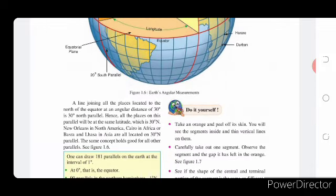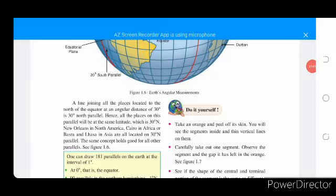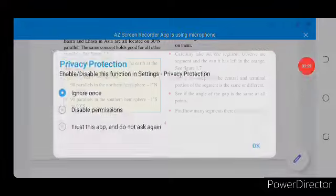The line joining all the places located to the north of the equator at an angular distance of 30 degrees is 30 degrees north parallel. Hence, the places on this parallel will be at the same latitude, which is 30 degrees north. New Orleans in North America, Cairo in Africa, Basra, and Lhasa in Asia are all located on 30 degrees north parallel. The same concept holds good for all other parallels. See figure 1.6.